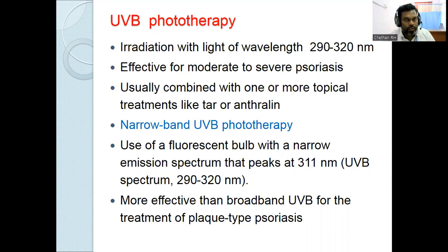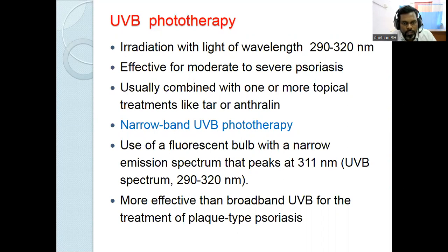UVB phototherapy uses wavelength 290 to 320 nanometers and is effective for moderate to severe psoriasis, usually combined with topical treatments like coal tar or anthralin. Narrowband UVB is most commonly used for plaque psoriasis, using a fluorescent bulb with emission peak at 311 nanometers.